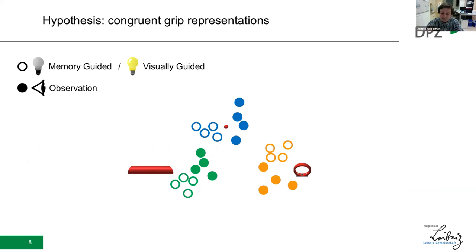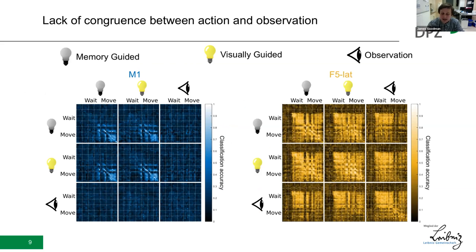Indeed, we should expect that if we classify grip type using neural activity recorded during movement, we should be able to use the same readout to determine those same grips during observation and vice versa. So we run a cross-classification analysis in this vein, comparing each pair of tasks at all possible pairs of epochs and timings. And we end up with these heat maps detailing each and every one of those pairwise cross-classification performances.